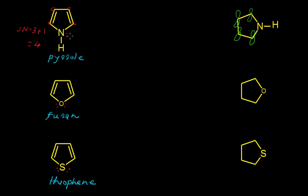This means we must show the resonance structure of pyrrole. The lone pair present on this nitrogen takes part in delocalization, and the negative charge goes onto that carbon atom. So here we can write the resonance structure of pyrrole.